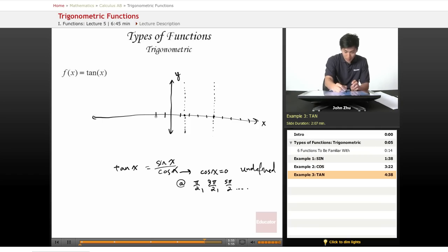And going the other way, it's the same. We have an undefined point, in other words, an asymptote right here.